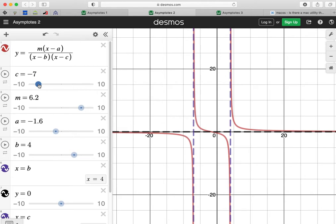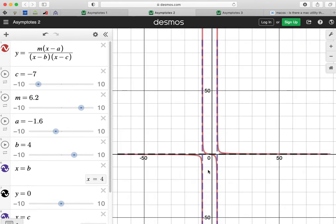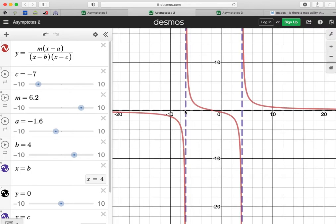So if we change c to negative 7, you can see negative 7 here. Let's zoom it in. Negative 7 has no y-coordinate as an asymptote. And when c, so when b, where's b? b is 4.